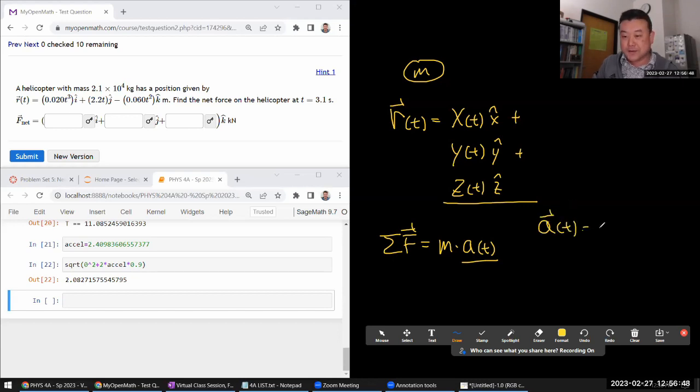And acceleration as a function of time, as a vector quantity, is given by derivative over velocity as a function of time. And velocity as a vector quantity is given by derivative of the position as a function of time. So, let's do it this way. I'm going to enter these three functions of time into SageMath, and let me just take the double derivative in SageMath.